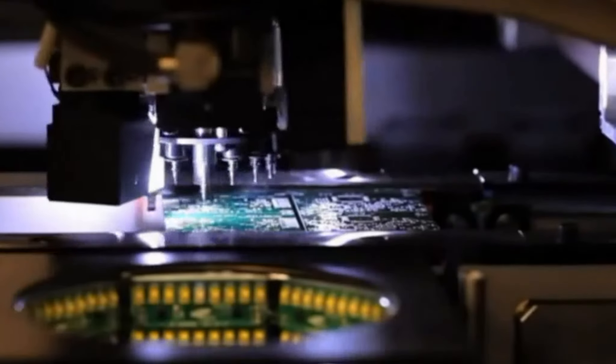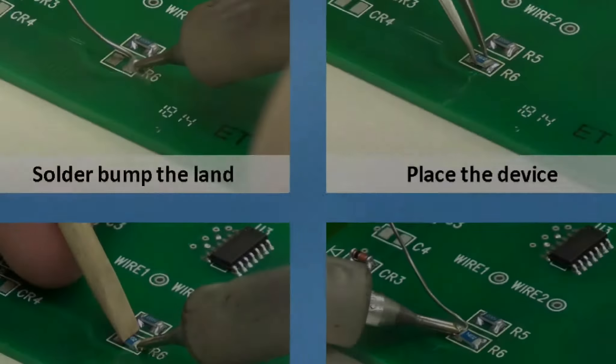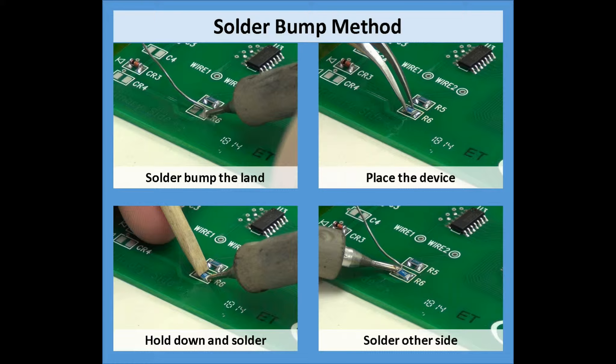Hand soldering is another story. Previously, we used what was called the solder bump method to hand solder rectangular chip style components. Because this method required the hold down of the component during the soldering process, it no longer meets the requirements of the F revision of J-STANDARD 001.